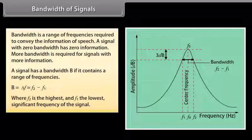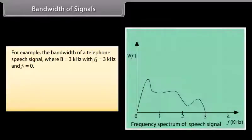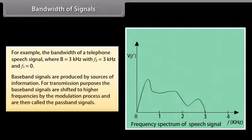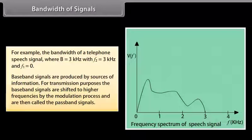F2 is the highest and F1 is the lowest significant frequency of the signal. For example, the bandwidth of a telephone speech signal is B = 3 kHz, with F2 = 3 kHz and F1 = 0. Baseband signals are produced by sources of information. For transmission purposes, the baseband signals are shifted to higher frequencies by the modulation process and are then called passband signals.